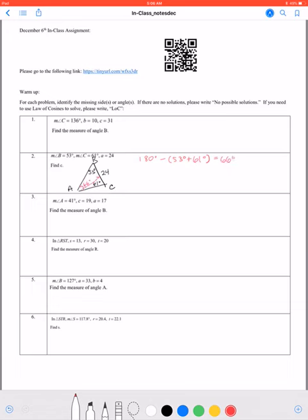And now I have an angle and its opposite side, so I can say the sine of 66 degrees over 24 equals... I'm finding the measurement of C, or the side C. And I can say the sine of 61 degrees over C.